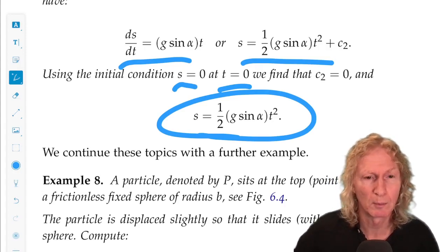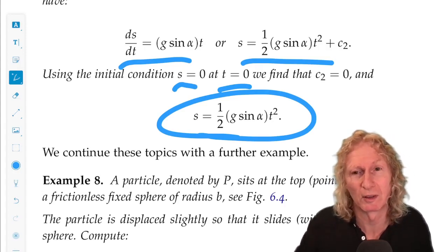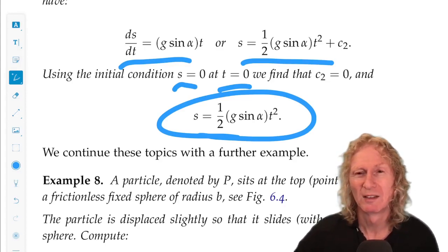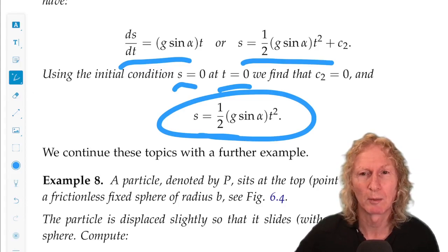For alpha equals zero, no incline, it doesn't move. There's nothing pushing it. And alpha equals pi over two, just a projectile type problem. Everything's moving vertically.